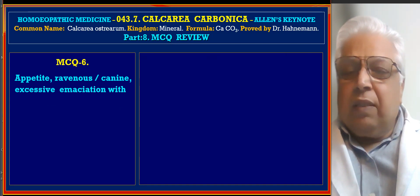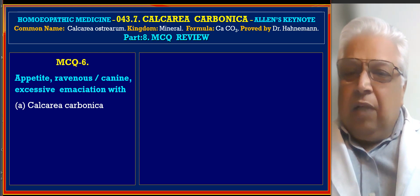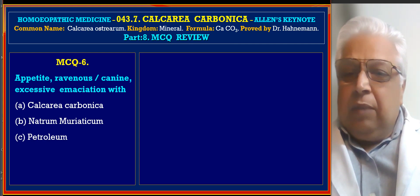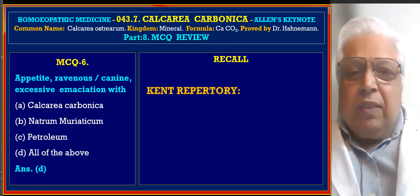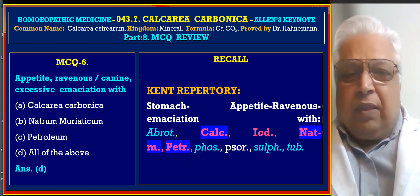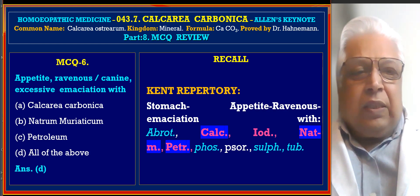MCQ 6: Appetite ravenous, canine, excessive with emaciation — which remedies? A. Calcarea Carb, B. Natrum Muriaticum, C. Petroleum, D. All of the above. Answer is D, all of the above. Reference from Kent's Repertory, stomach — appetite ravenous with emaciation: Calcarea, Natrum Muriaticum, and Petroleum all appear in first grade.